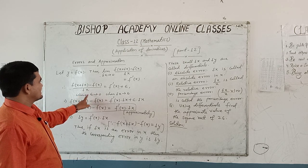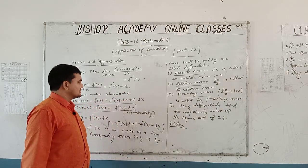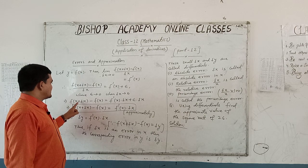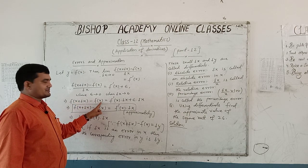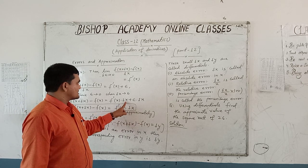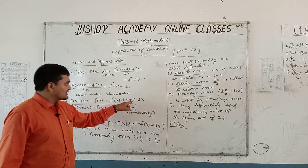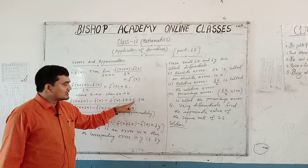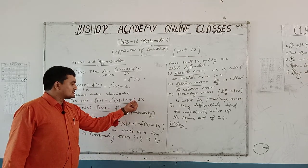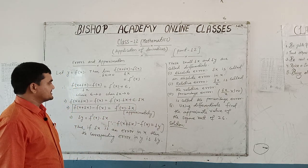Epsilon tends to 0 when delta x tends to 0. This implies that f(x + delta x) minus f(x) equals f'(x) into delta x plus epsilon into delta x. Here, epsilon tends to 0 and also delta x tends to 0, so the product of epsilon and delta x is a very small quantity.